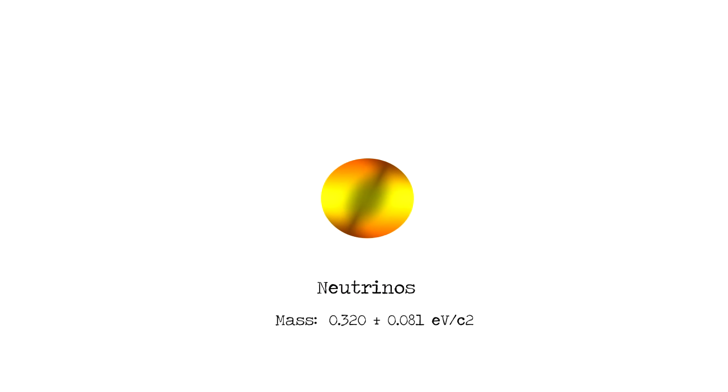Next up, we lose our subatomic particle virginity and meet our first neutrino. Don't worry, she's lovely and she has lots of friends. There are around 65 billion of them passing through just one square centimeter of Earth every second.